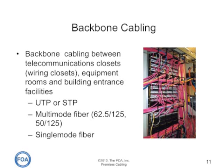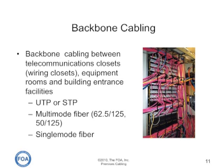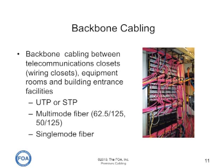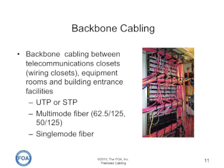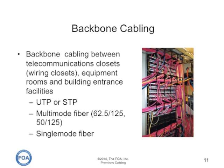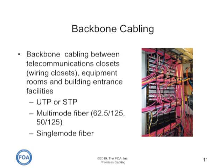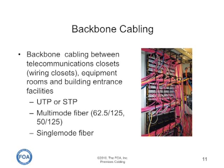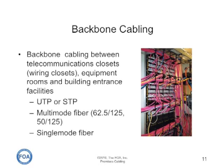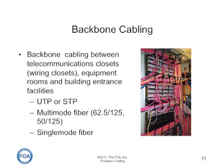Backbone cabling is the cabling that runs from equipment rooms to telecom closets. While it may be unshielded twisted pair, or even screened or shielded twisted pair cabling, in enterprise networks it tends to be multi-mode fiber — typically today 50/125 OM2, OM3, or OM4 rated fiber — or single-mode fiber, because of the higher traffic on the backbone and the higher bandwidth required.